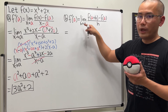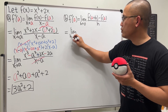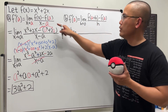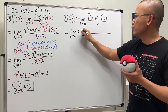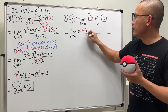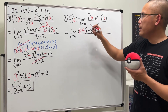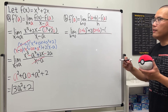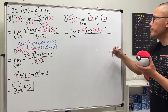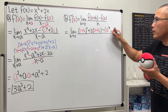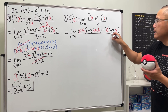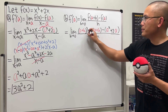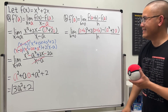Version 2 uses h. We have the limit as h approaches zero. For f of (a + h), we substitute (a + h) into both terms of the function, giving us (a + h)³ plus 2(a + h). Then we subtract f of a, which is a³ + 2a, just like before. All of this is divided by h. Notice that (a + h) must be cubed, which is why this version is harder to expand.